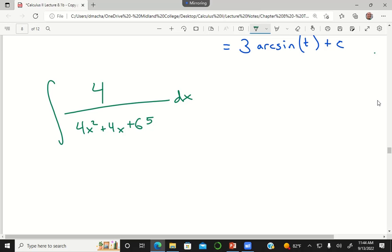We're completing the square. In my denominator I have this quadratic but it's not a perfect square. In order to make it a perfect square, that discriminant has to be equal to zero, which is b squared minus 4ac.